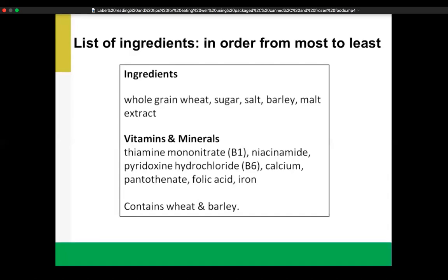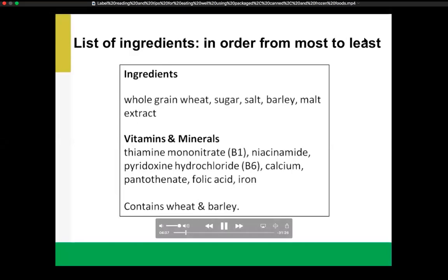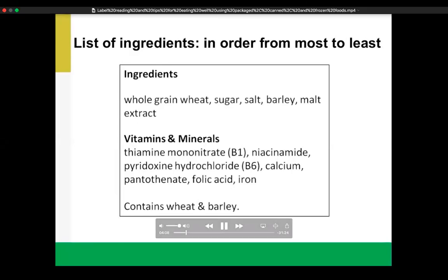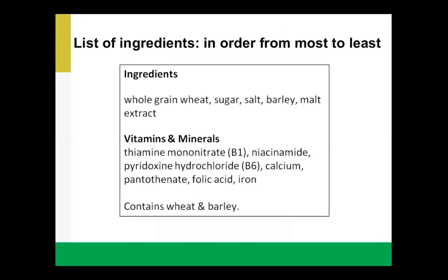We're going to start with how to read an ingredients list. You'll find it on the back or side of a package, and it lists all the ingredients used to make the food. It's important to know that ingredients are listed in order from most to least based on their weight — so the first ingredient is found in the highest amount and the last in the smallest. When reading an ingredients list, look where sugar, salt, or oils are listed.